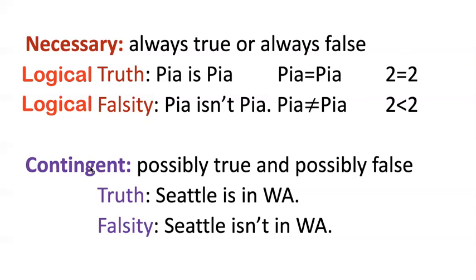Contingent just means it's not always the case — it could be true or it could be false. Just because something is contingent, we don't know whether it's true or false; that depends on what the world is like. Logical truths are also actually true, so if you just know something is actually true you don't know whether it's contingently or necessarily true — you have to think about the logic of the sentence. Here's a contingent truth: 'Seattle is in Washington.' That's a fact about the world, but it doesn't have to be the case — hundreds of years ago it wasn't true; Seattle wasn't even a city and Washington wasn't even a state. So it's not necessarily true, just possibly true.